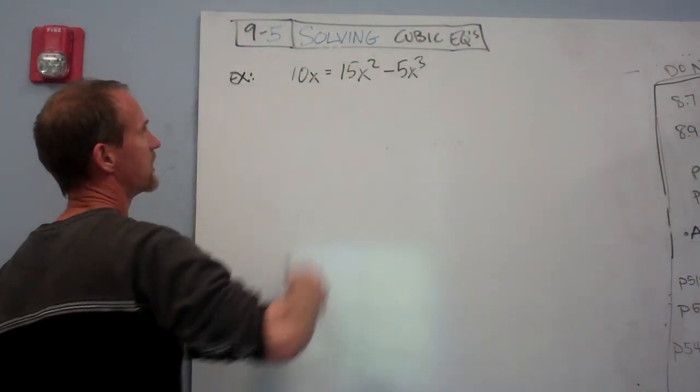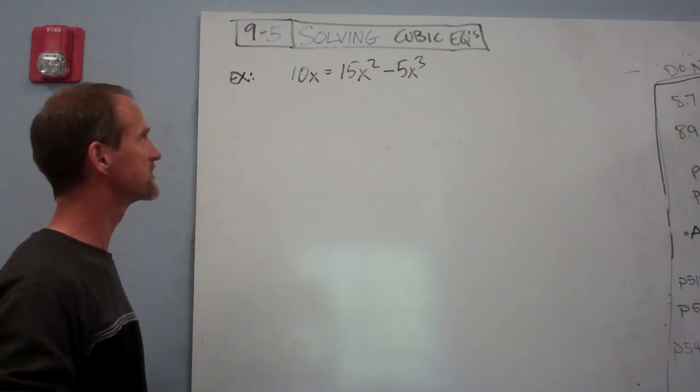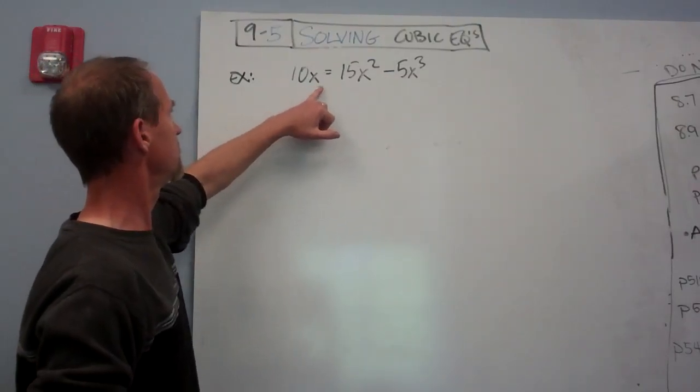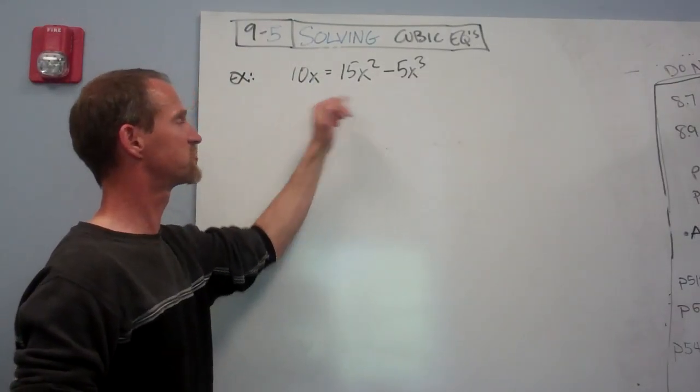Okay, up to 9.5. We are now solving cubic equations, moving away from graphing into solving. Solving in algebra means that we can find a value for x that when we substitute that in, makes a true statement.